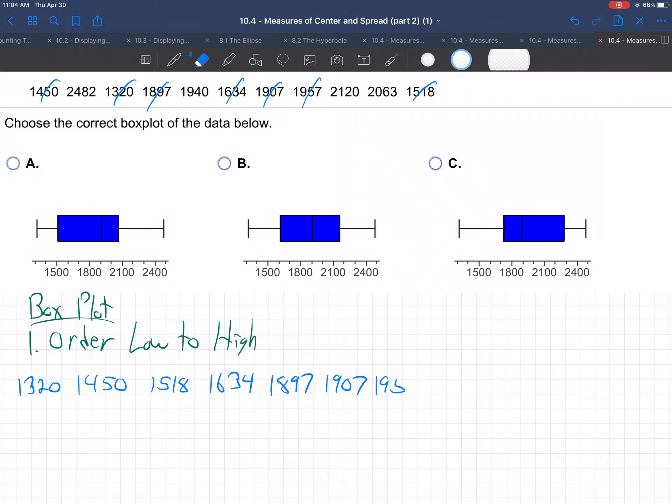Maybe I'm kind of crowding that in there a little bit. Okay, oh, I skipped 1940, didn't I? So 1940, then 1957. Okay, so now we're into the 2000s. Looks like 2063, followed by 2120, and followed by 2482. Okay, there we go. So we ordered them from low to high.